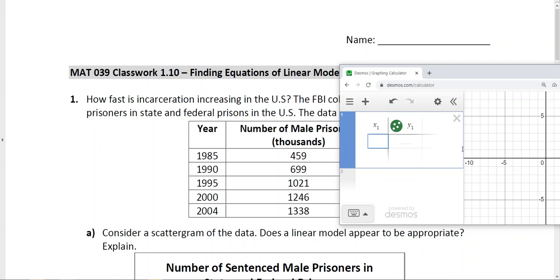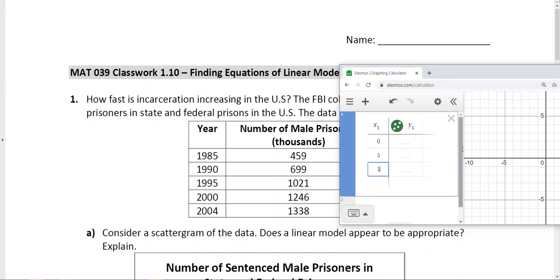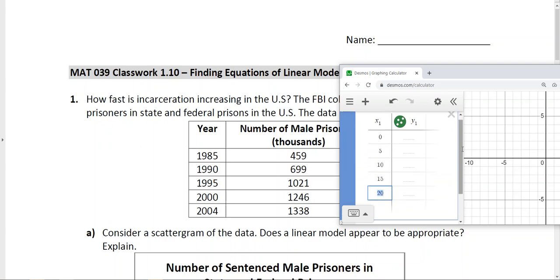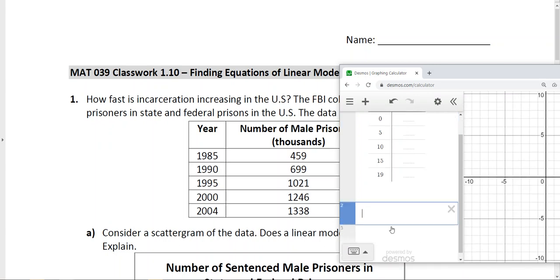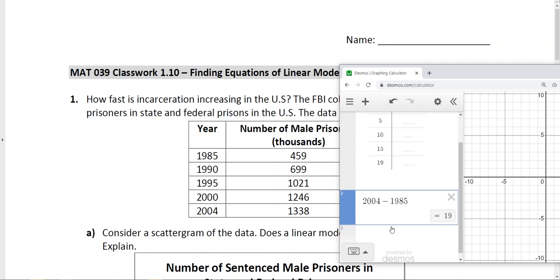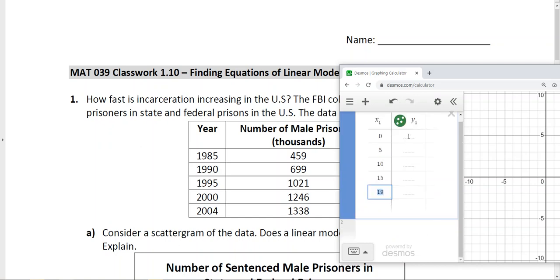When I start my chart I'm going to start with 0. Then 1990 is 5 years since, 1995 is 10 years past 1985, then 15 years past. Notice it does not go to 2005, it goes to 2004, so instead of 20 years it's going to be 19 years past. We can confirm that because 2004 minus 1985 is a period of 19 years.